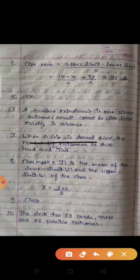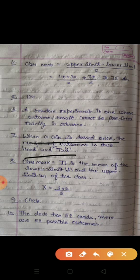When a coin is tossed once, the number of outcomes is 2: head or tail. The outcome is 2, head or tail.